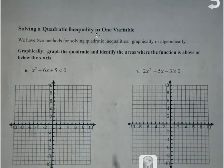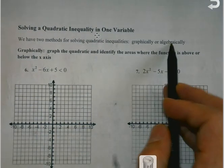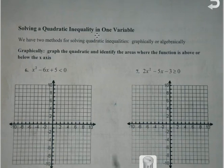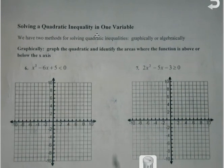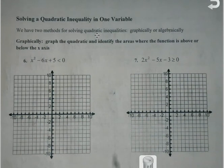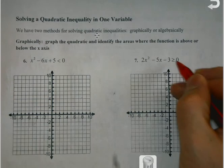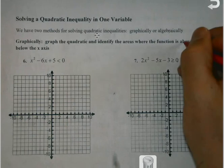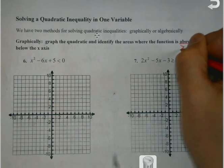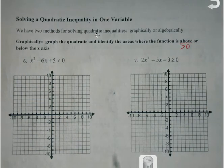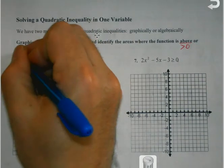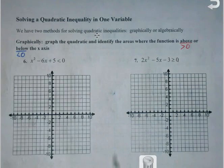When we flip over, we're going to try to avoid doing it algebraically, because there are a few things that can cause issues that I don't think are necessary. So we're going to try to go graphically here: graph the quadratic and identify the areas where the function is above or below the x-axis. Here's a definitive rule: greater than 0 will be above the x-axis, less than 0 will be below.